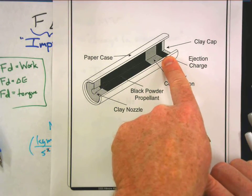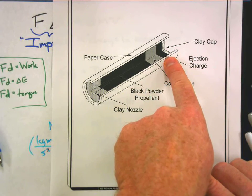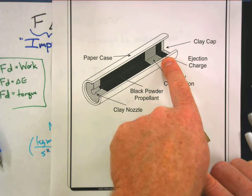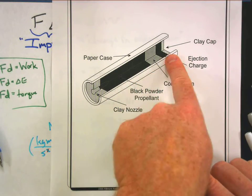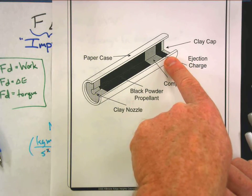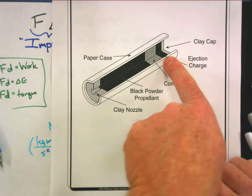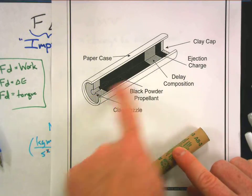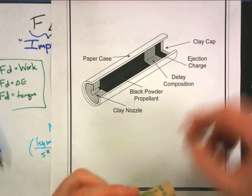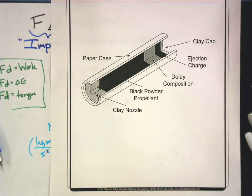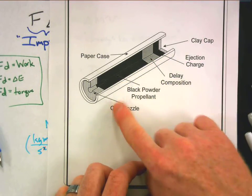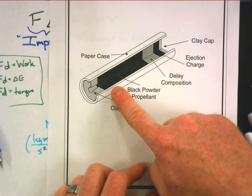As it burns it finally gets to this extra little bit of fuel, and it's an ejection charge. It burns very rapidly, almost like a tiny explosion, and what it does is it over-pressurizes the interior of the engine and it blows off the clay cap. When the ejection charge burns, it cannot get out of the nozzle fast enough, pressure builds in the chamber and it blows off this clay cap. Basically it ejects out of the front of the rocket the parachute or whatever recovery system it uses.